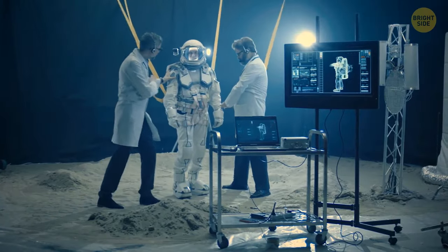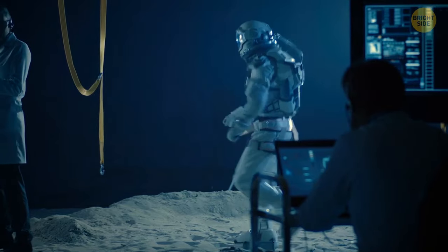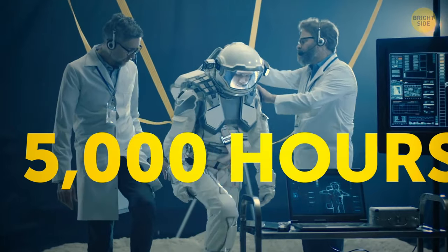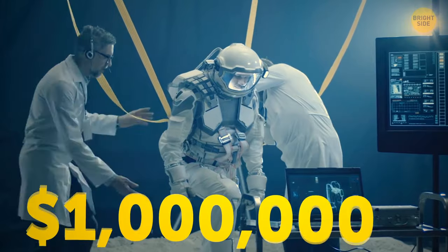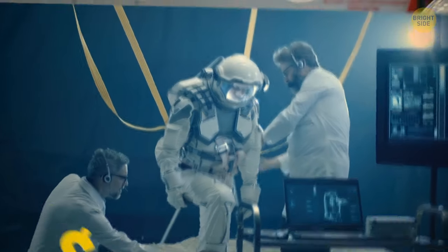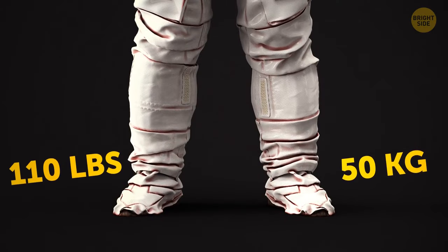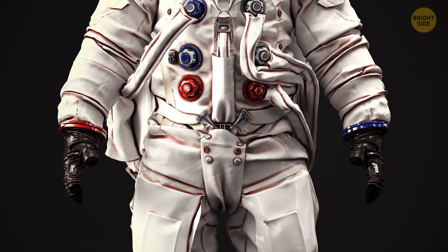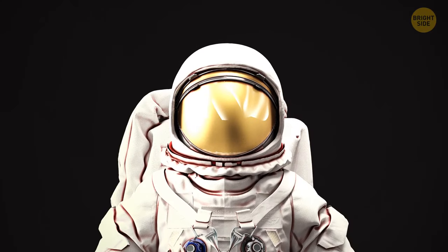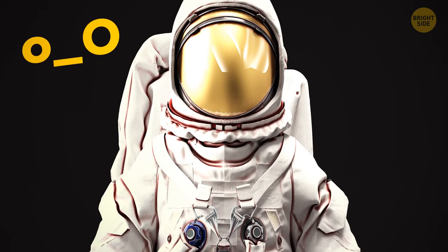If you want to build a spacesuit, get ready to work really hard. It takes 5,000 hours to make it, and will cost you a million dollars. A really good one will have 11 layers of material and weighs about 110 pounds, and it needs to be comfortable. You'll need more space in there, because you grow up to 2 inches when in space.